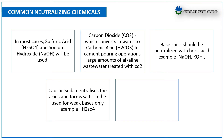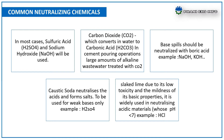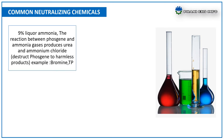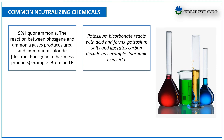Slaked lime, due to its low toxicity and mildness of basic properties, is widely used in neutralizing acidic materials whose pH is less than seven — for example, HCl. 9% liquor ammonia: the reaction between phosgene and ammonia gases produces urea and ammonium chloride; hence it is used for bromines and tri-phosgenes. Potassium bicarbonate reacts with an acid and forms potassium salts while liberating carbon dioxide gas.